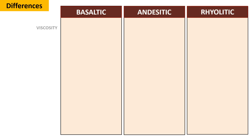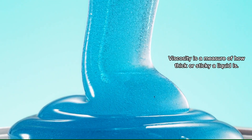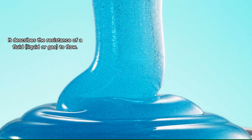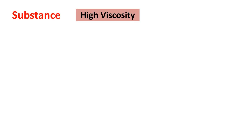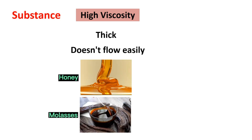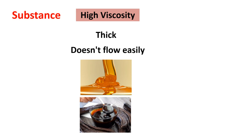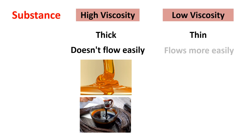Let us begin with their viscosity. Viscosity is a measure of how thick or sticky a liquid is. It describes the resistance of a fluid, liquid, or gas to flow. In simple terms, a substance with high viscosity is thick and doesn't flow easily, like honey or molasses. On the other hand, a substance with low viscosity is thin and flows more easily, like water.